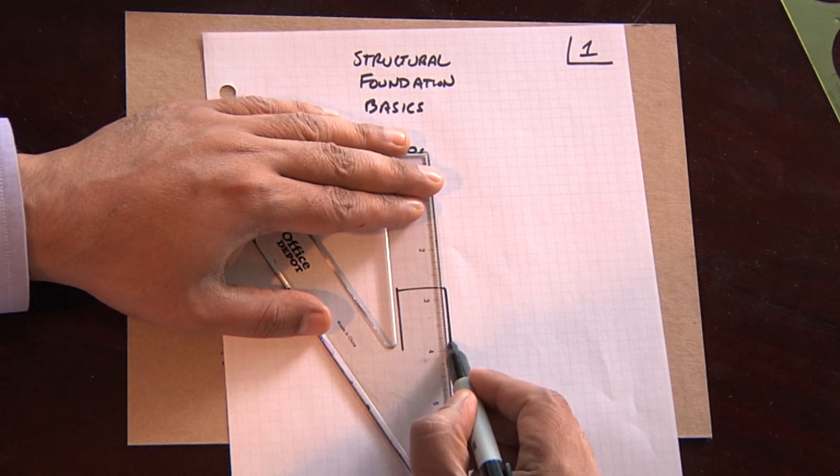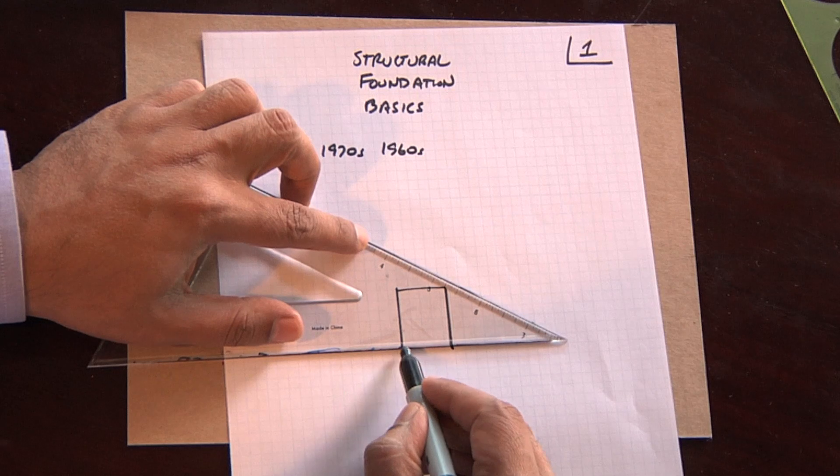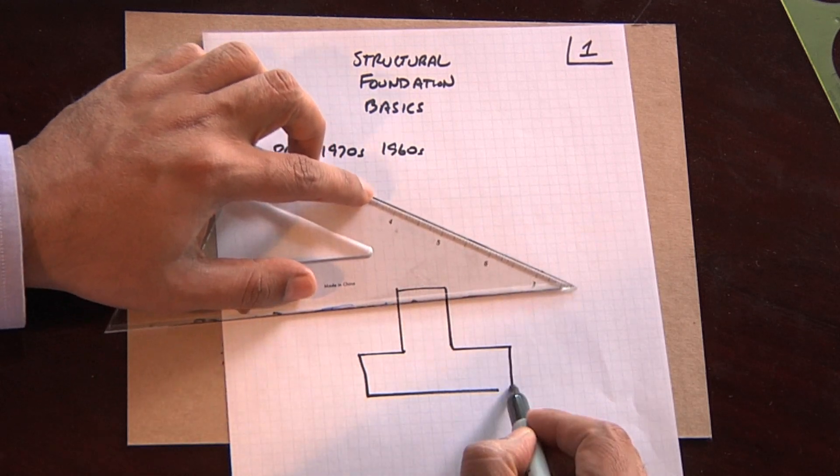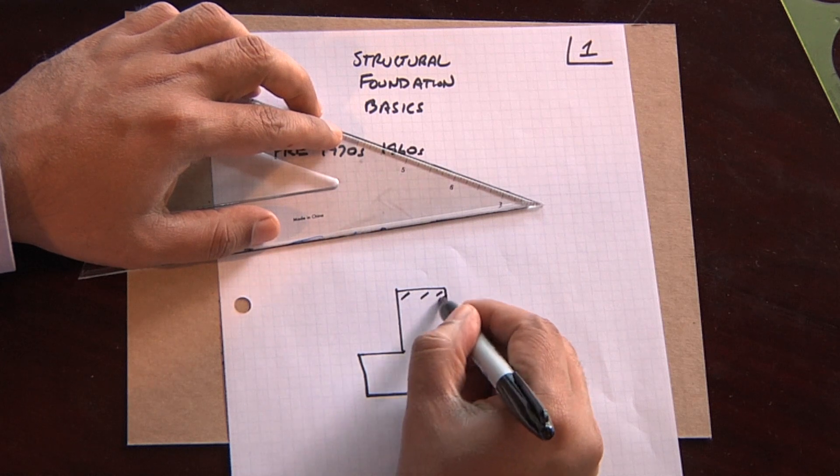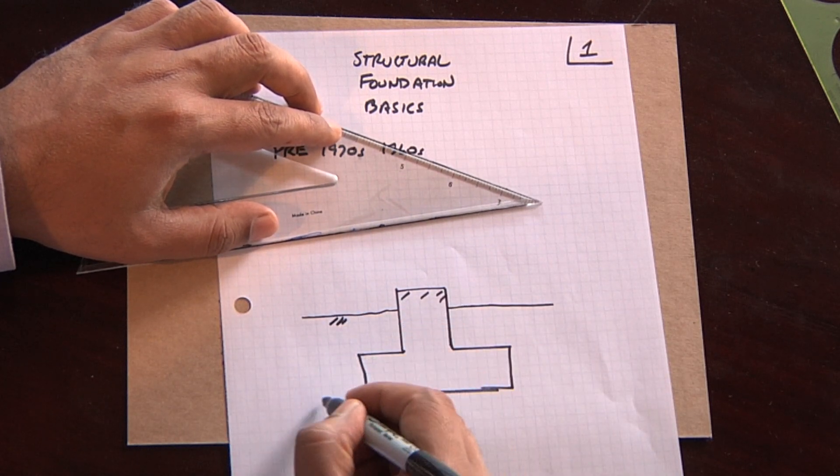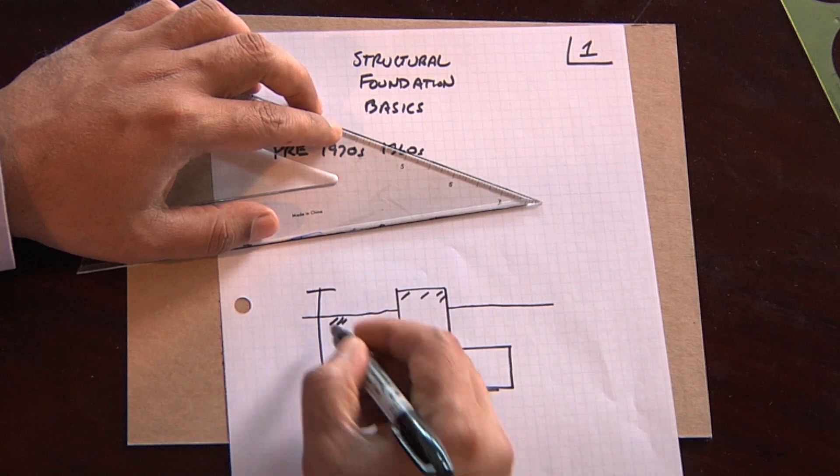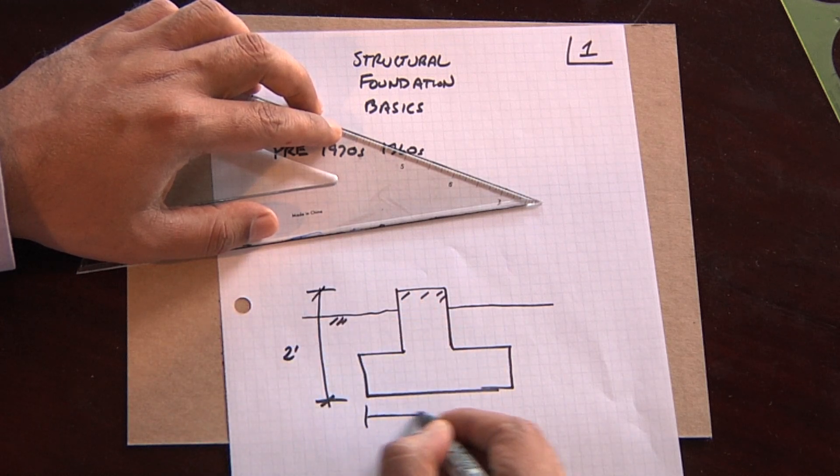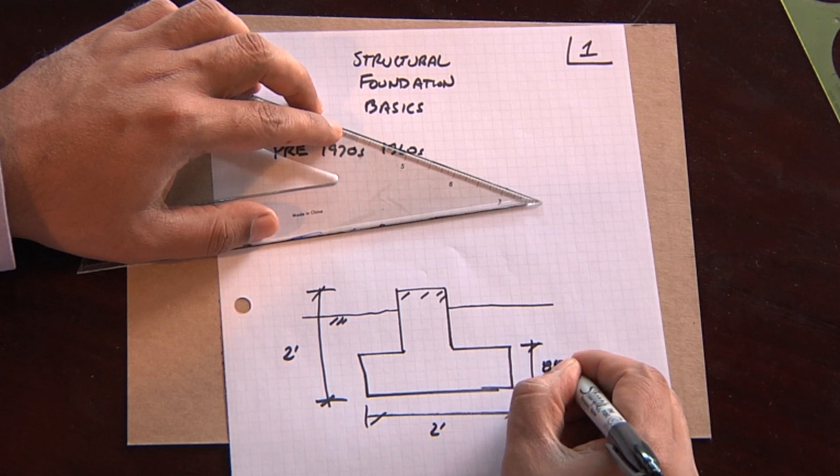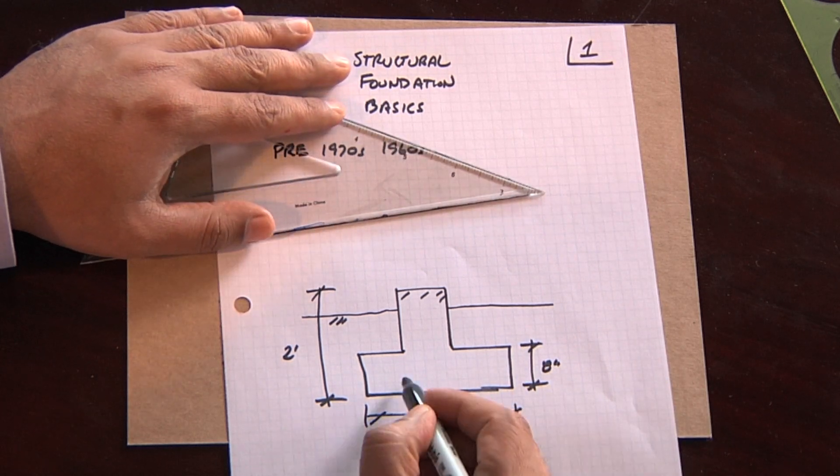We had what's called a raised floor foundation system. And a raised floor foundation system consists of a footing, which is normally, say, two feet deep, with a base which is approximately two feet. A part of the footing here, which is about eight inches thick, very minimal amount of steel.